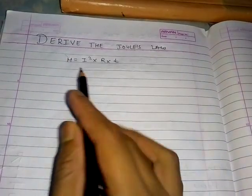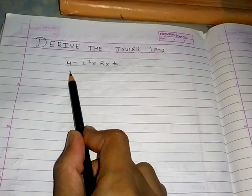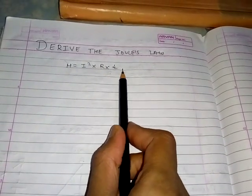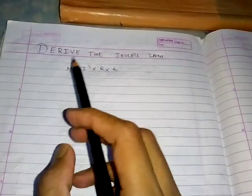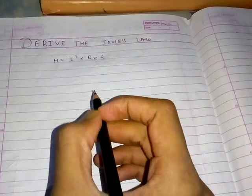This is the heating effect. This is called Joule's law. The heating effect is directly proportional to the square of current, resistance, and time taken. So we have to prove this.